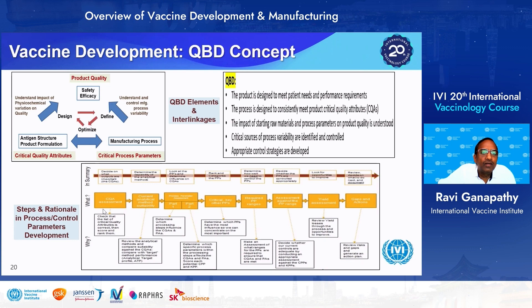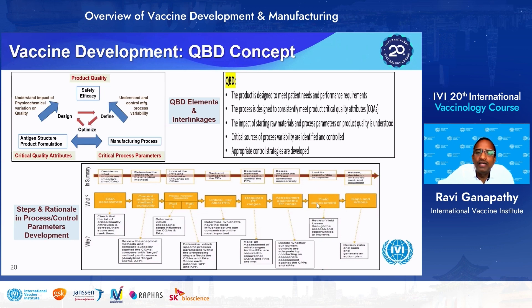To implement QbD: first, make a CQA assessment — what attributes are needed to analyze the product, and which analytical methods should be used. Identify which attributes are critical and affected by changes in critical process parameters. Based on this, identify the critical process parameters and set ranges for each. Check the impact on CQAs, and make a yield assessment to ensure that at the required yield target, process parameters meet all required critical quality attributes. Review any gaps or needed parameter relaxation, and generate an action plan for scale-up or further process development.